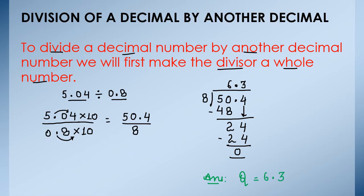So what we have to do? We have to check how many places are there after the decimal. Then we have to multiply that divisor and dividend by 10, 100, or 1000 according to the number of decimal places. And then we have to divide in the normal way as we divide whole numbers.